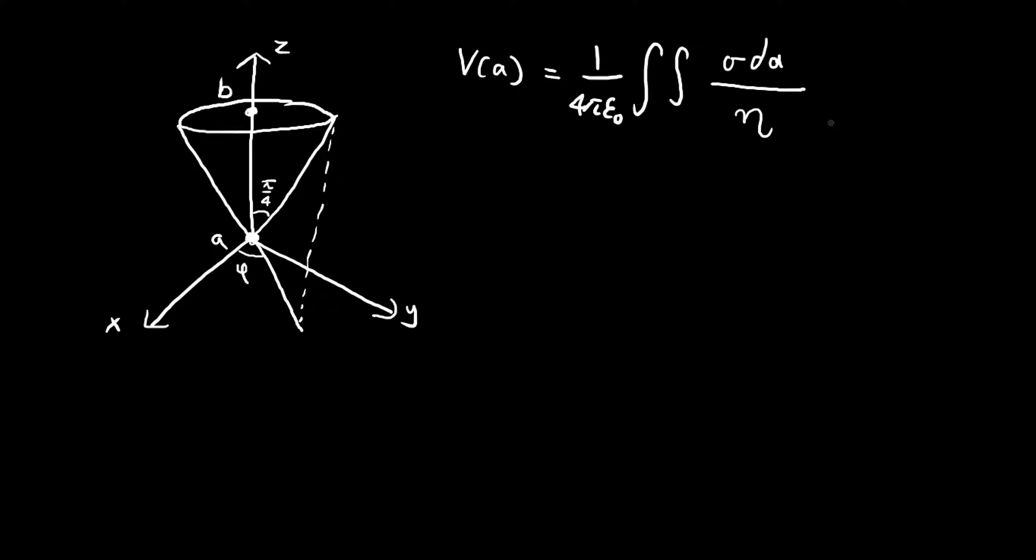When we're integrating over the conical surface, in the book instead of this Greek symbol eta they use this weird r-like symbol, but I'm going to use eta. The next challenge in evaluating this integral is to figure out what dA should be. If you look at the diagram, we can actually use spherical coordinates to help us solve this integral.